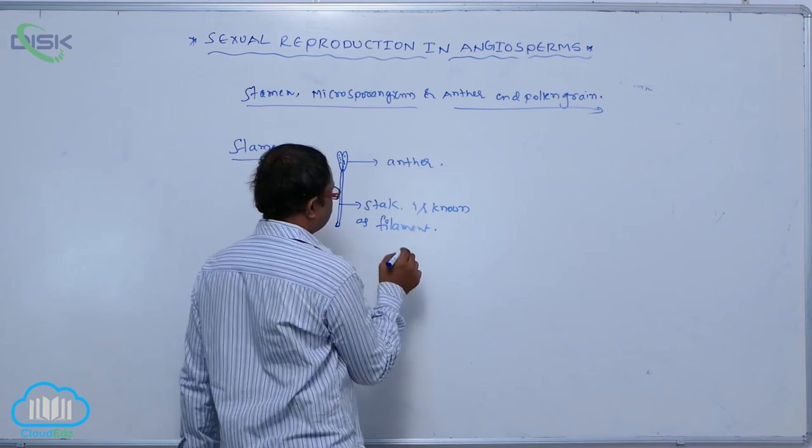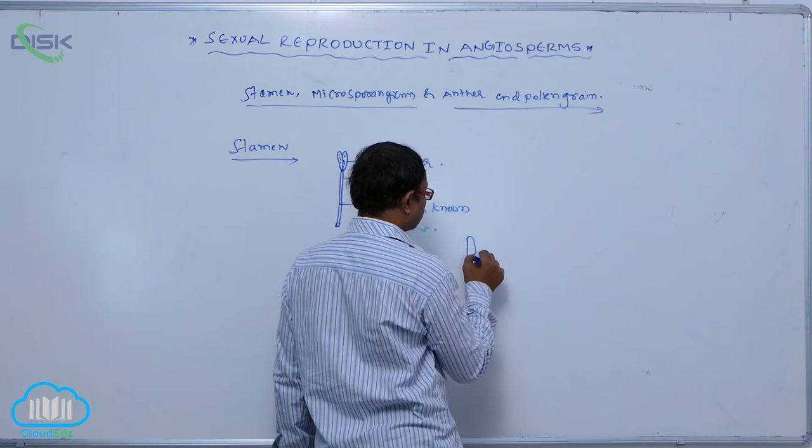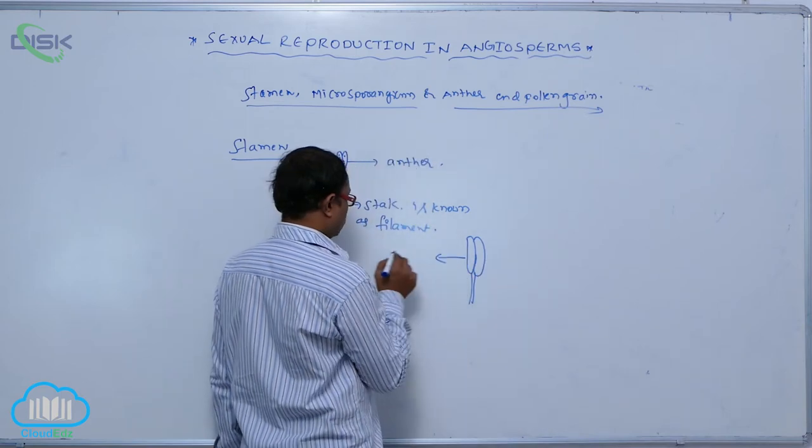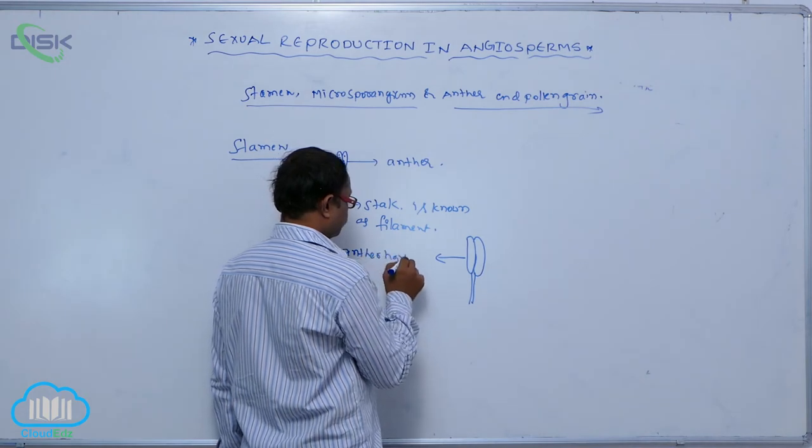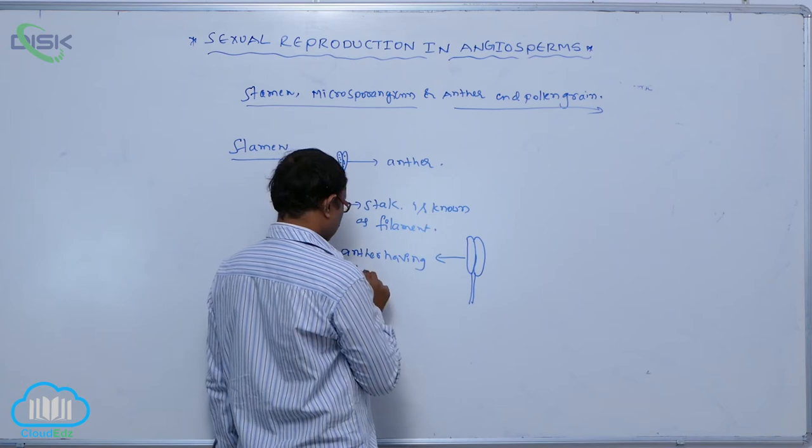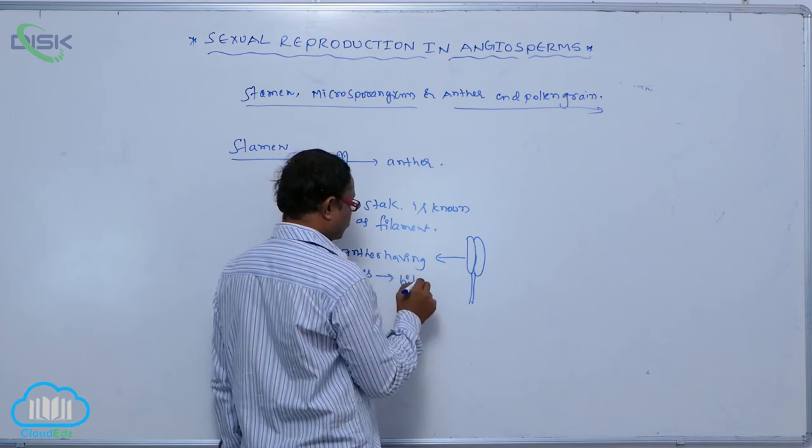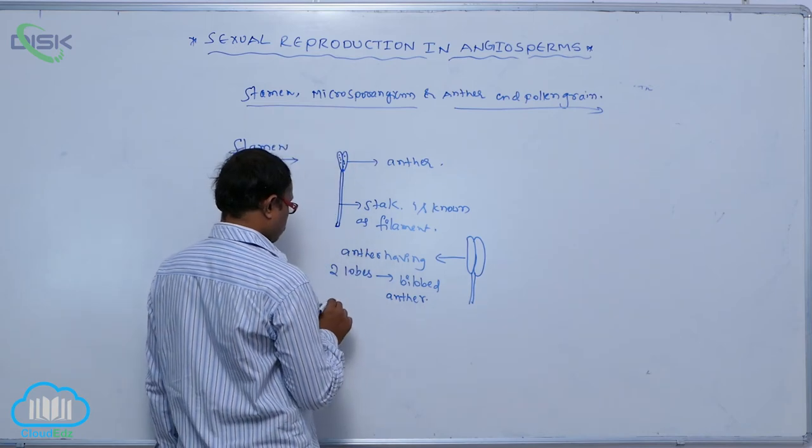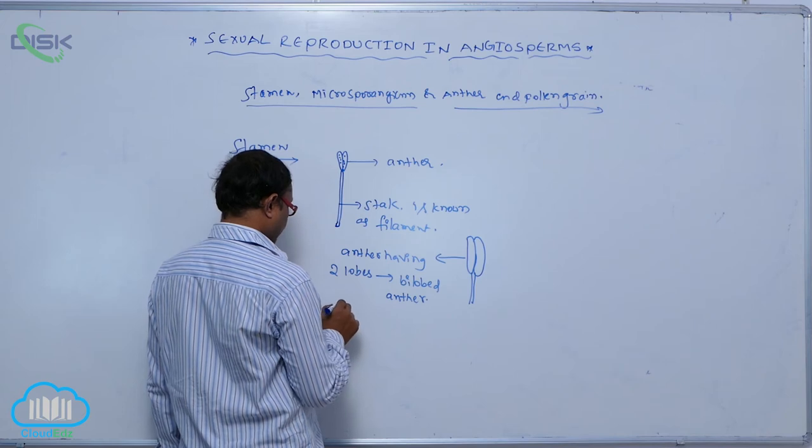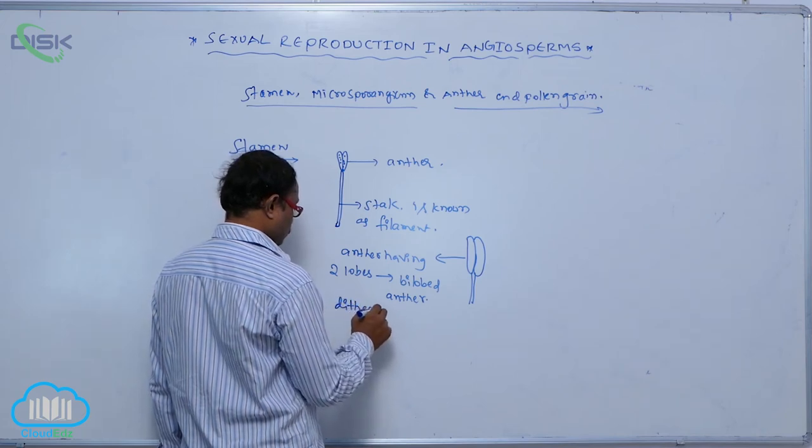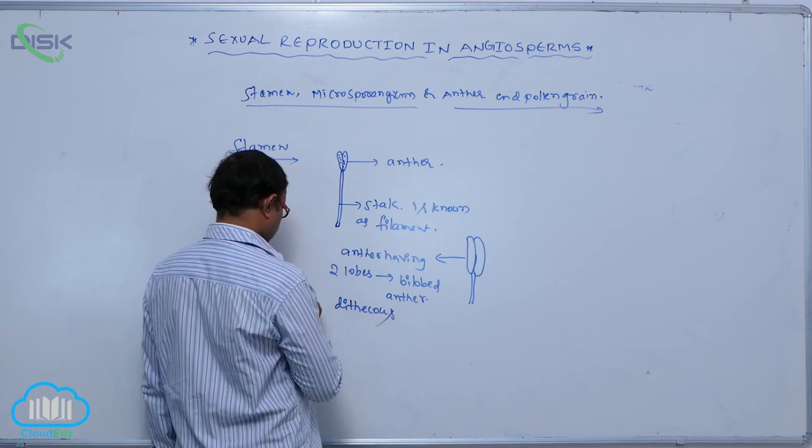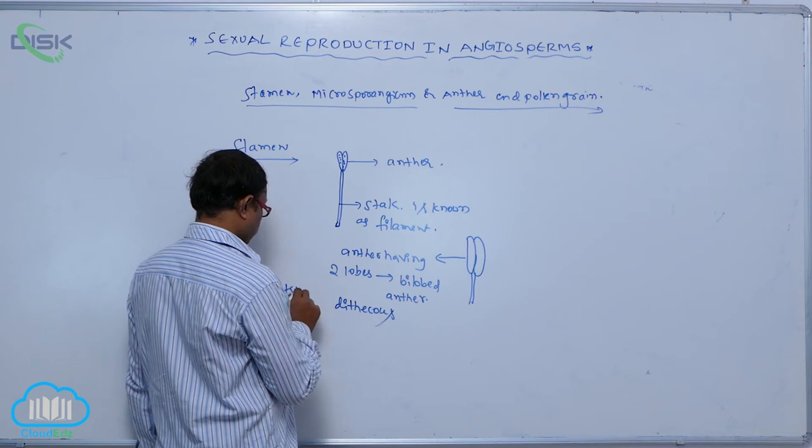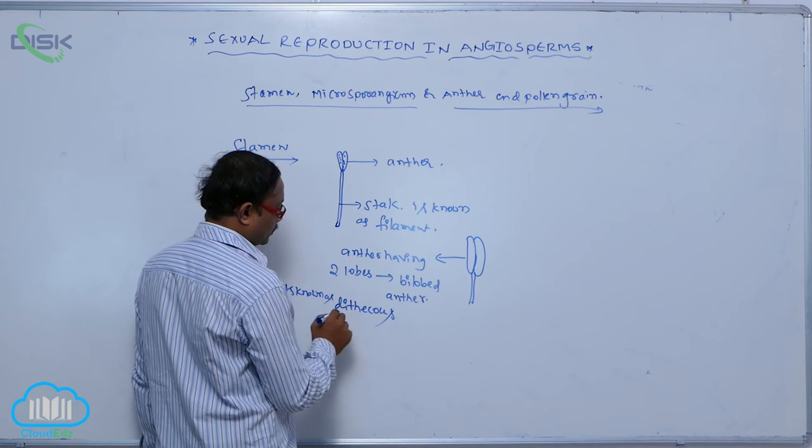The anther has two lobes. Each anther having two lobes is known as a bilobed anther. This is described as a dithecous anther.